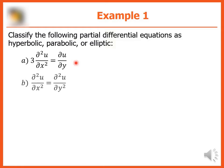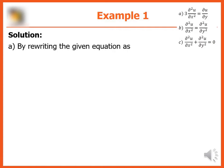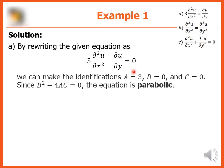We have three equations to classify as either hyperbolic, parabolic, or elliptic. For letter a, we rewrite the given equation and make the identifications: a is three, b is zero, and c is zero. Since b squared minus 4ac is equal to zero, therefore the equation is parabolic.